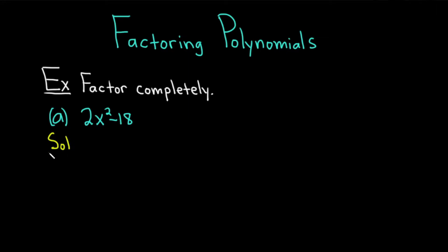Solution. Whenever you're thinking about factoring a polynomial, you always want to start by seeing if there's a common factor. In this case, both terms — 2x squared and negative 18 — have a common factor of 2.